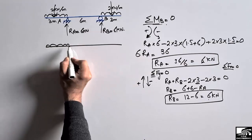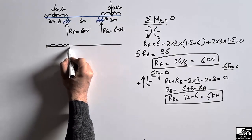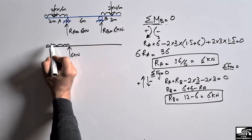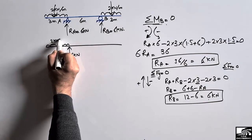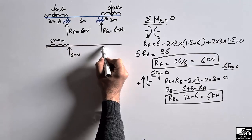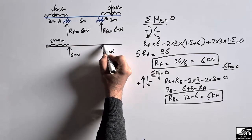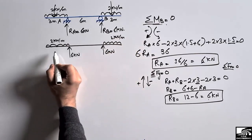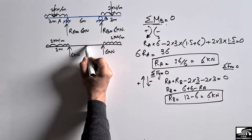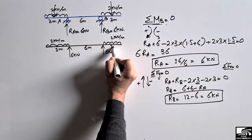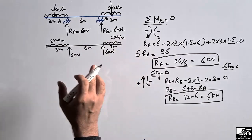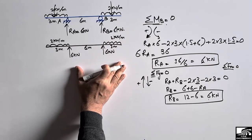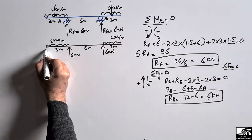Here is the free body diagram for this beam. RA is 6 kilonewtons, RB is 6 kilonewtons. The left overhang has a UDL of 2 kilonewton per meter and the right overhang also has a UDL of 2 kilonewton per meter. The left overhanging span is 3 meters, the middle span is 6 meters, and the right overhanging span is 3 meters. Now I will draw the shear force diagram from this free body diagram.